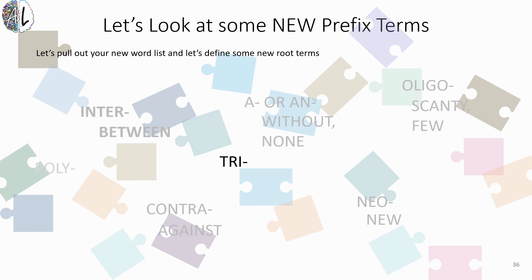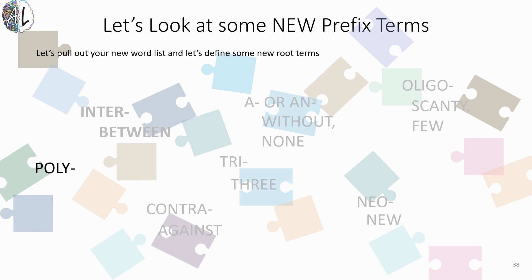Next we have the prefix 'tri' — T-R-I. Just like 'quad' referred to four, 'tri' is looking at a number and it refers to the number three.